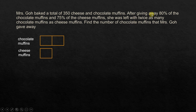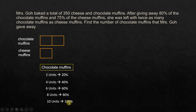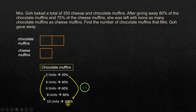Now, after giving away 80% of the chocolate muffins, what is left should be 20%. For chocolate muffins, two units represent 20%. Going through the steps: 4 units = 40%, 6 units = 60%, 8 units = 80%, 10 units = 100% — that is the total number of chocolate muffins. The shortcut is to multiply directly by 5: 5 times 20 makes 100%, and 5 times 2 gives 10 units. So 10 units represents 100% — chocolate muffins total 10 units.